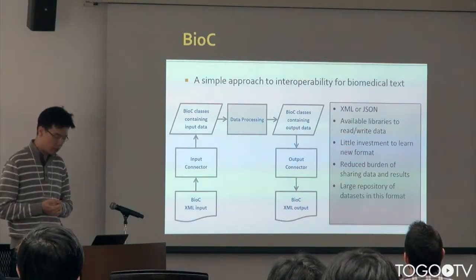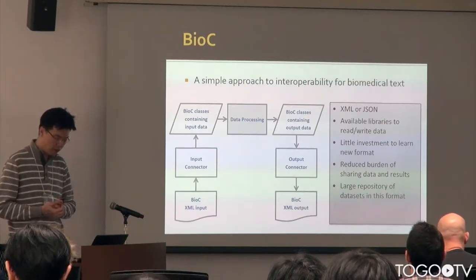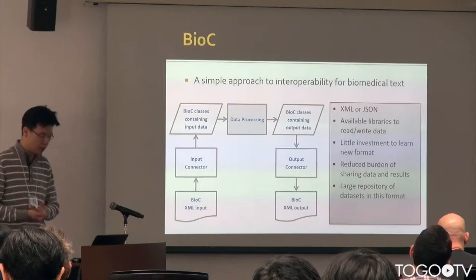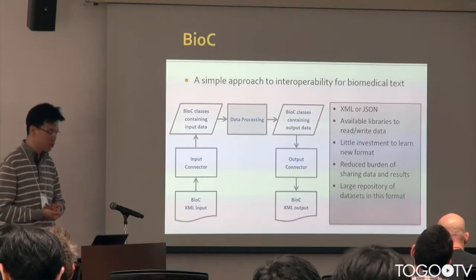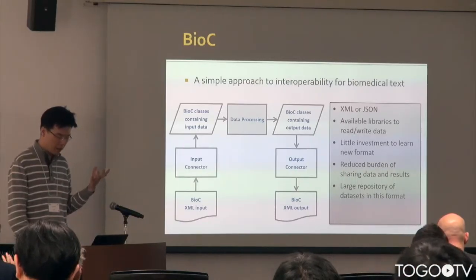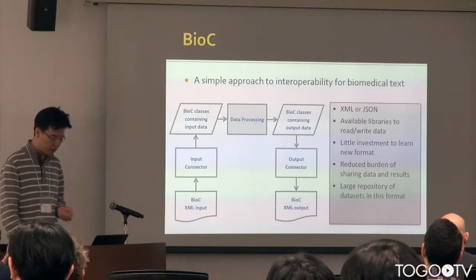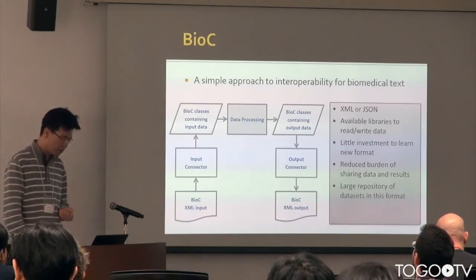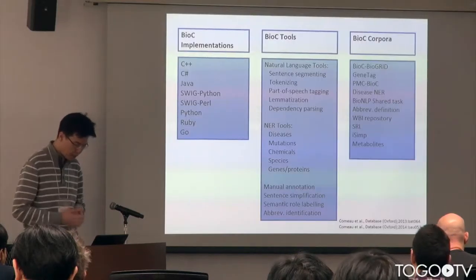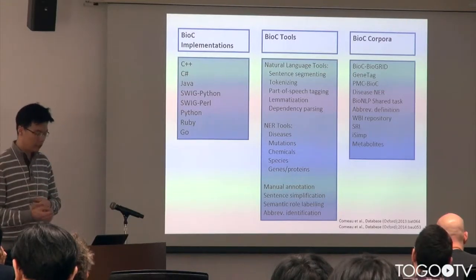BioC is a simple approach to interoperability for biomedical texts. It has been a couple of years since it first came out. BioC is a data structure, and XML and JSON are used for data serialization formats. There are BioC libraries implemented in many different languages. One good thing about BioC is there is little effort necessary to learn it, and there are a good number of datasets already available in BioC. These are examples of BioC libraries, tools, and corpora.